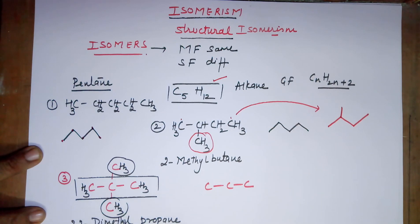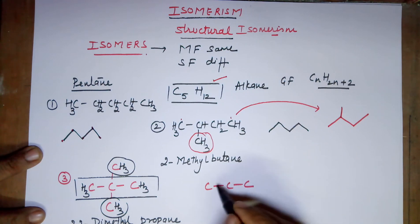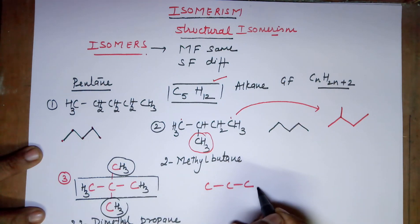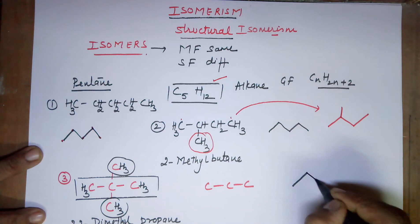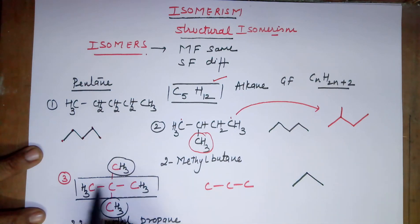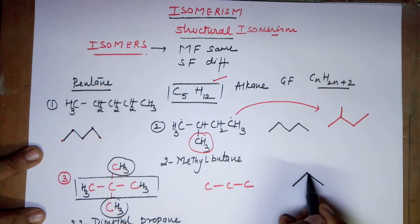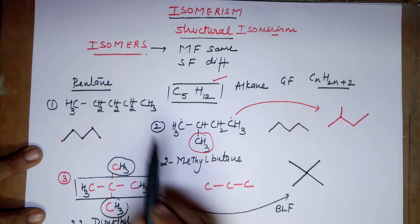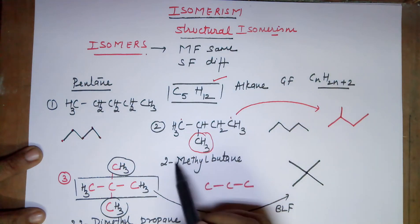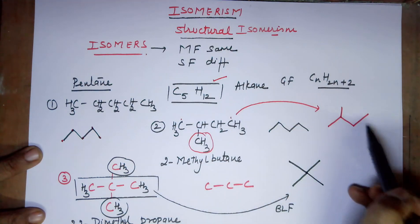dimethylpropane. Drawing the structural formula, it can also be done in bond line format. The bond line format has one, two, three carbons; on the second carbon you have two additional methyl groups. This is the bond line formula for 2,2-dimethylpropane. The bond line formula for 2-methylbutane and for normal pentane have also been shown.